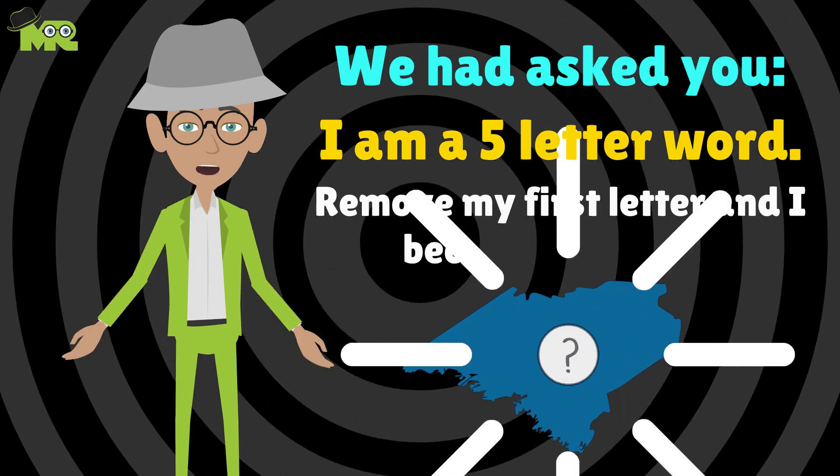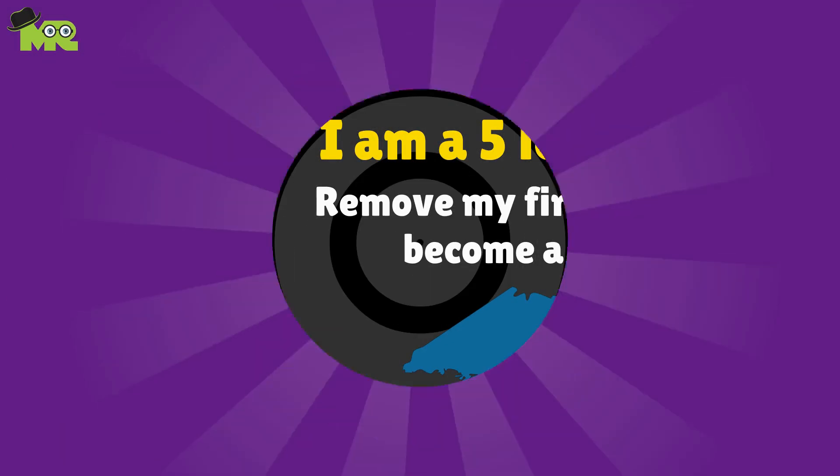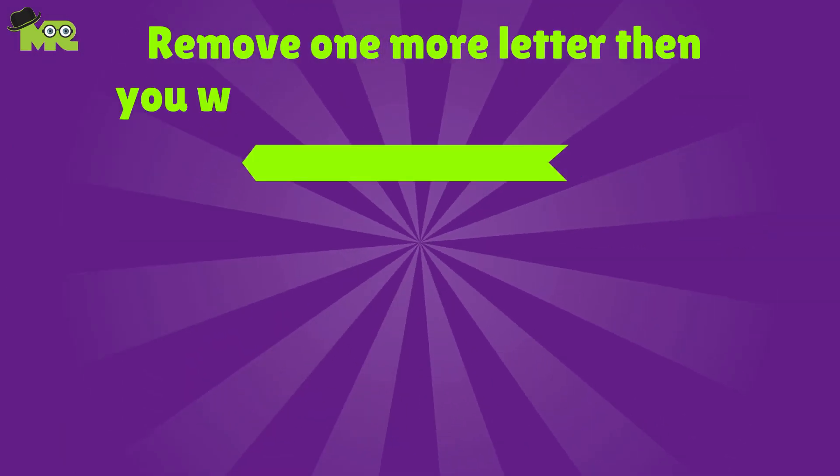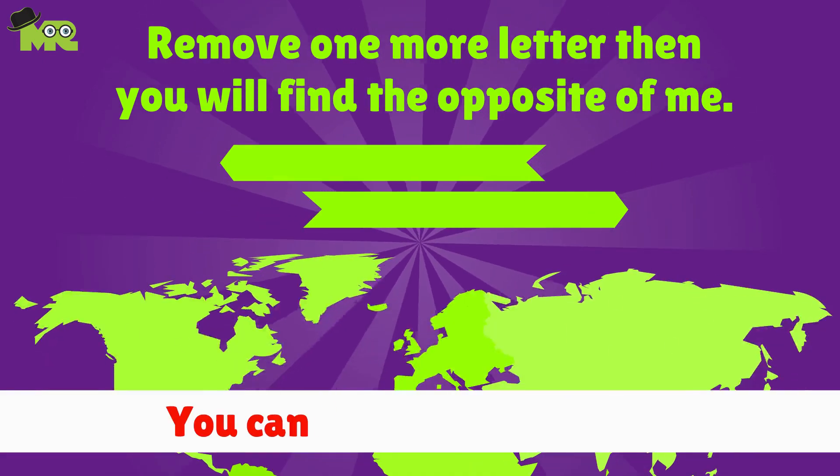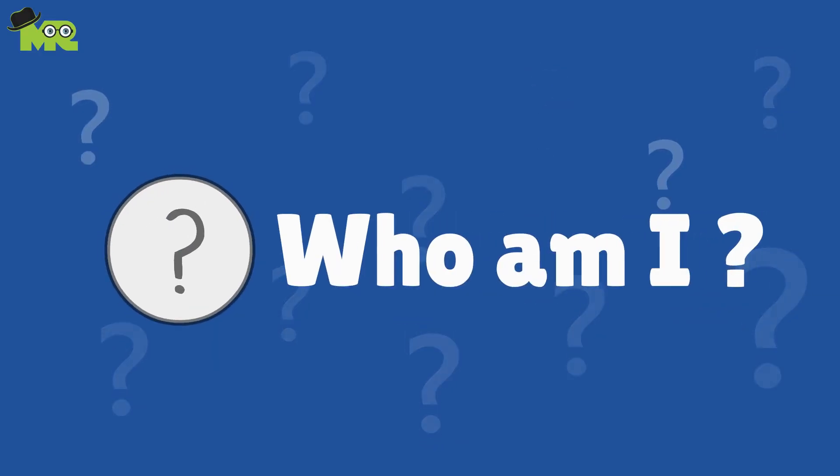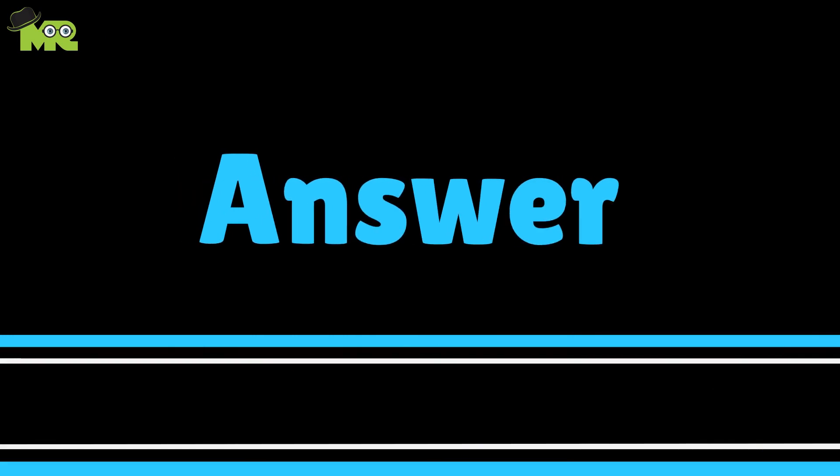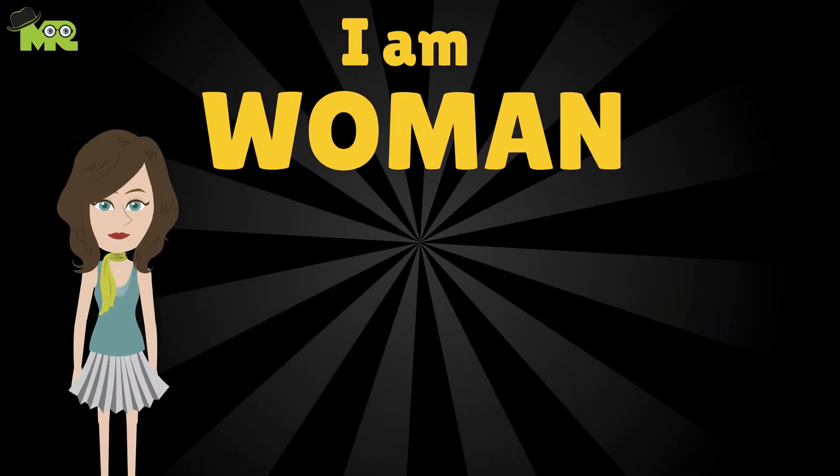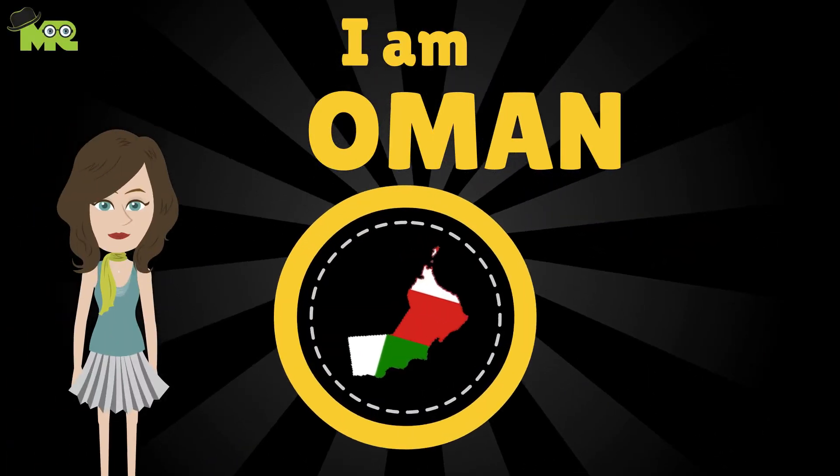my first letter and I become a country. Remove one more letter then you will find the opposite of me. You can find me everywhere. Who am I? The answer is: I'm a woman. Remove W from me and I